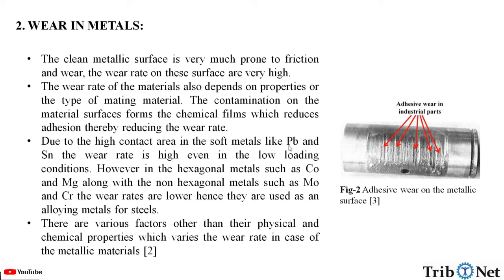Due to the high contact area in soft metals like tin and lead, the wear rate is high even in low loading conditions. However, in hexagonal metals such as cobalt and magnesium, along with non-hexagonal metals such as molybdenum and chromium, the wear rates are low, hence they are used as alloying metals for steels. There are various factors other than these physical and chemical properties which affect the wear rate in case of metallic materials.